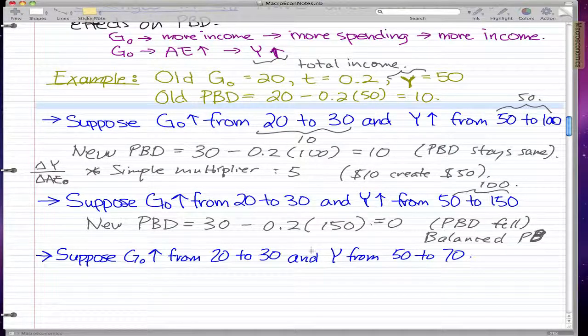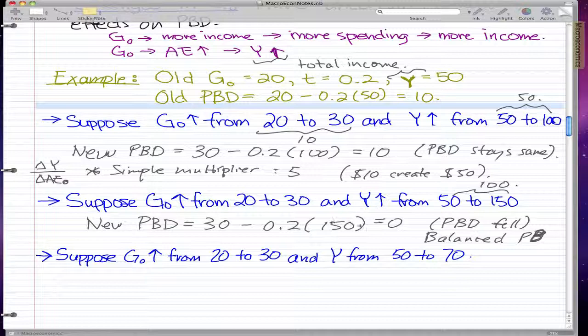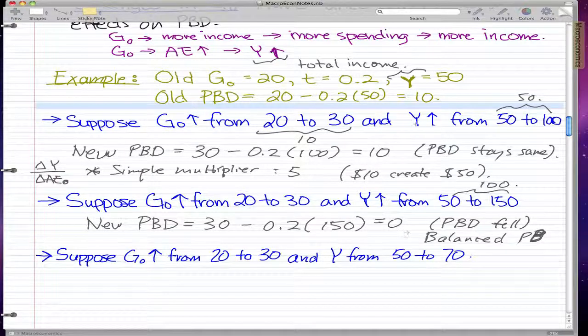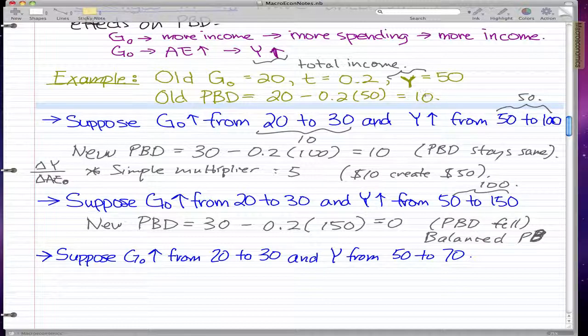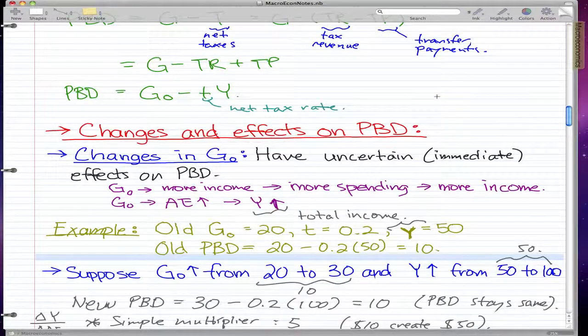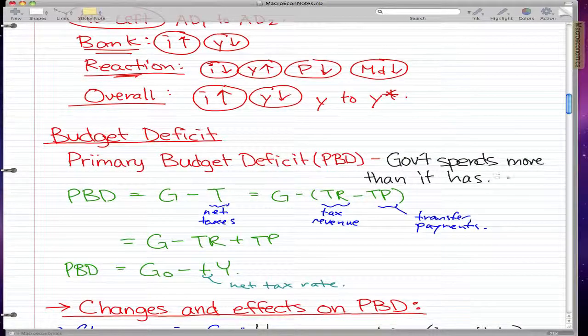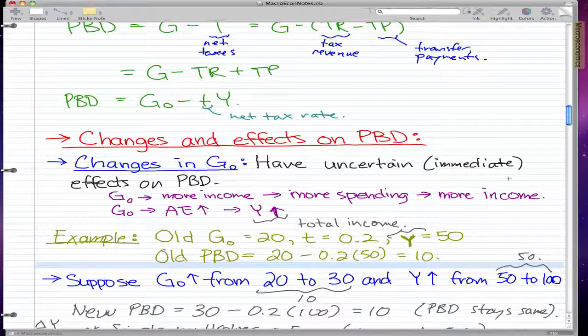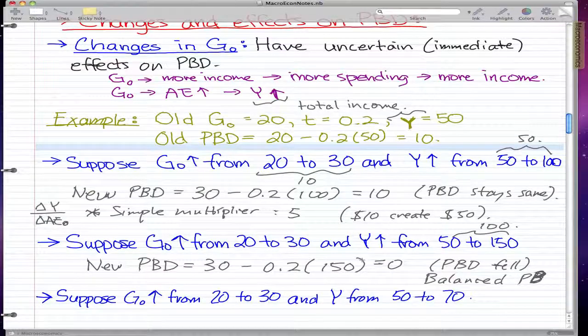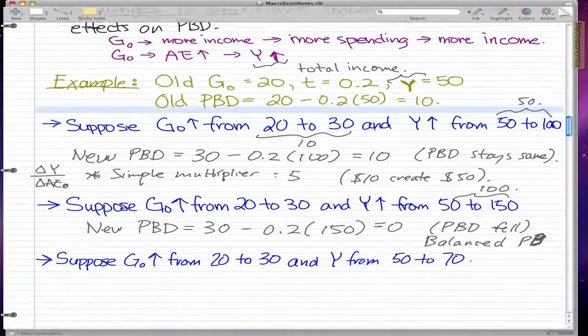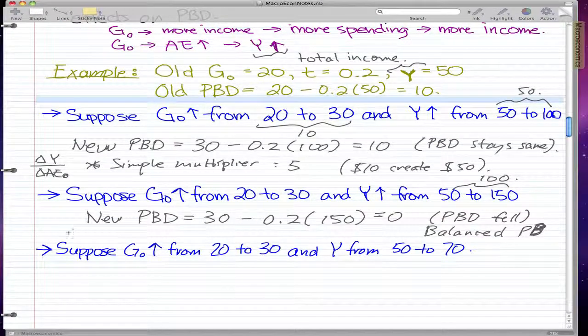The amount that the government spent in relation to the old PBD is better, because our primary budget deficit before was 10. That means the government spent more than it has in the last year, but in this year they actually broke even and didn't spend as much.